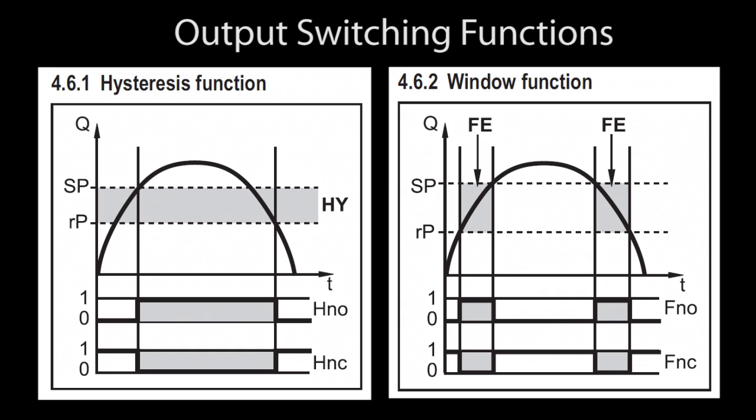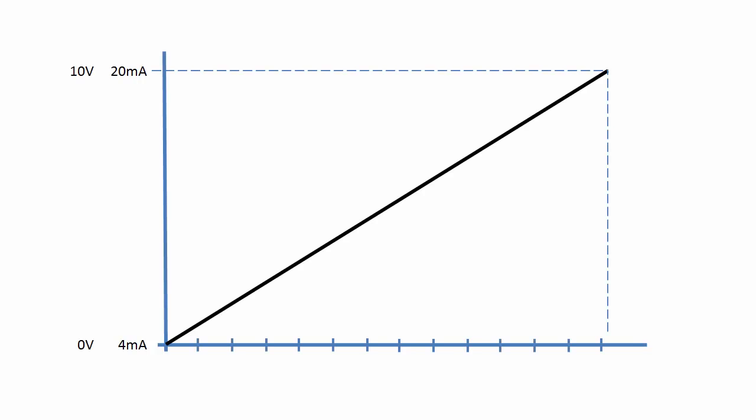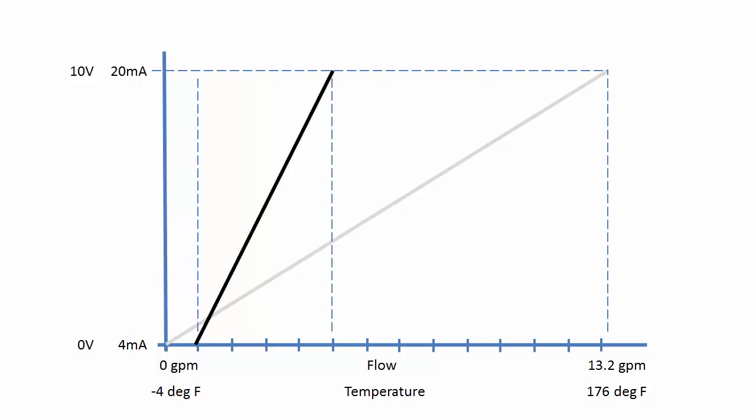Well, that was output 1, so let's do an output 2 parameter setting example. Output 2 is the analog output on this sensor. Normally, the output 4 to 20 milliamps or 0 to 10 volt range corresponds to the max extremes of the flowmeter or built-in temperature sensor. For this sensor, that would be 0 to 13.2 gallons per minute or minus 4 to 176 degrees. If we know our flow rate is going to be between 1 and 5 gallons per minute for example, then we can scale the output to match that so we get to use the full range of output values to represent that 1 to 5 gallons and not be limited to just a small range of values.